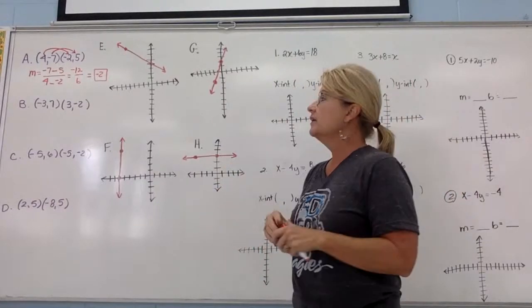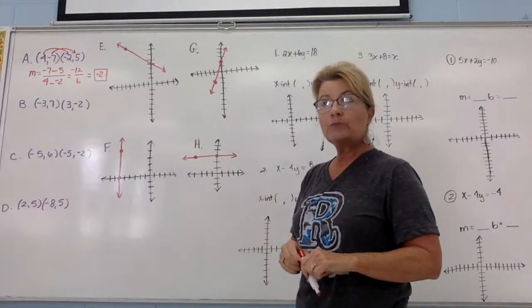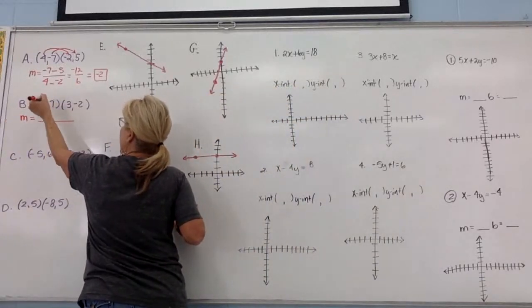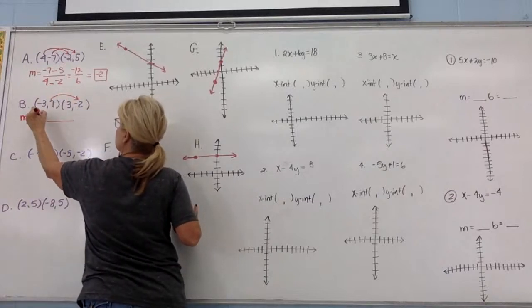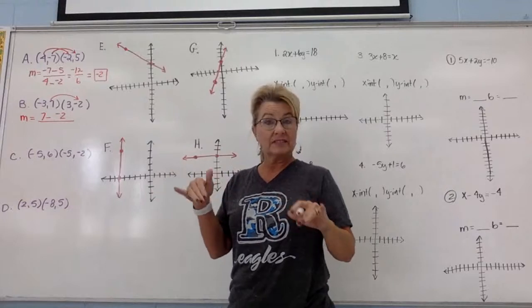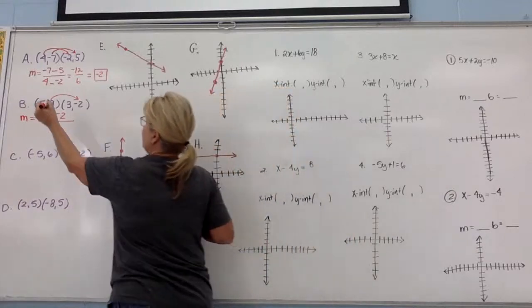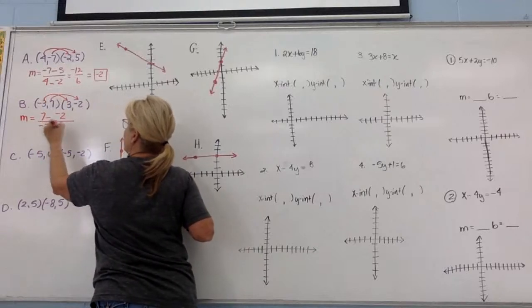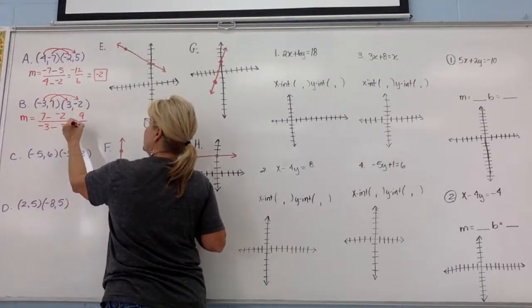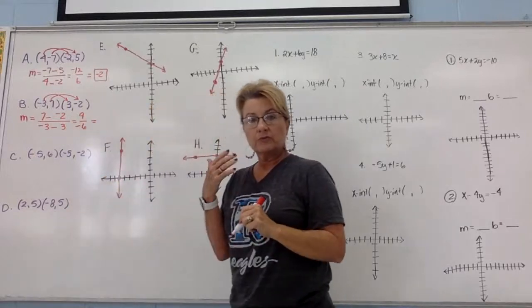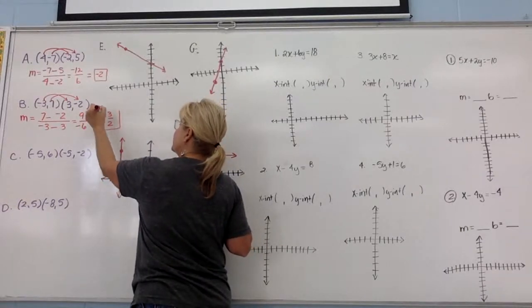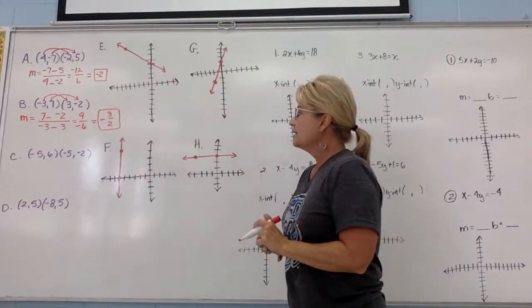For Example B, slope m equals: 7 minus negative 2 goes on top — y's always go on top — and negative 3 minus 3 on the bottom. That gives 9 over negative 6, which reduces to negative 3 over 2. That is as simple as it gets.